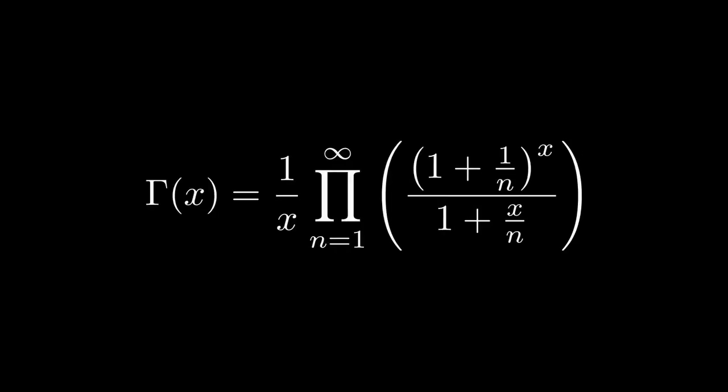Gamma of x also has this cool product formula. I will not discuss how it works because it would make things really hard to grasp. We will just use this formula to show that the identity is true. So gamma of x equals 1 over x times the infinite product from n equals 1 of 1 plus 1 over n to the power x over 1 plus x over n. We have the first part of the identity.